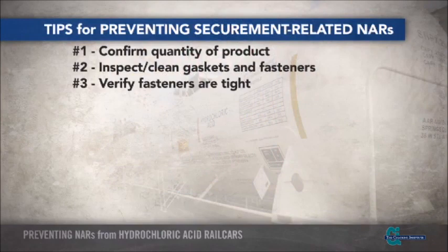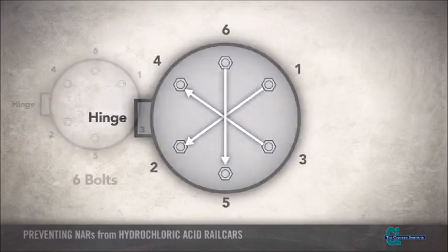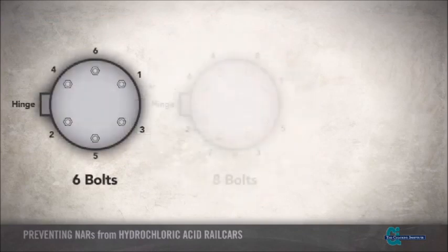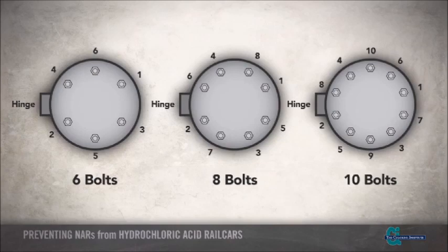Once all fasteners and gaskets are in good condition, all fasteners on fittings should be tightened using the proper criss-cross pattern torquing method. Sample torquing patterns are shown for fittings with 6, 8, or 10 bolts, but the concept is similar for fittings with a different number of fasteners. All fasteners should be wrench tight. Tank cars with protective housings may make tightening fasteners more difficult due to limited clearances. If you have difficulty tightening fasteners, contact your supplier for recommended tightening practices.